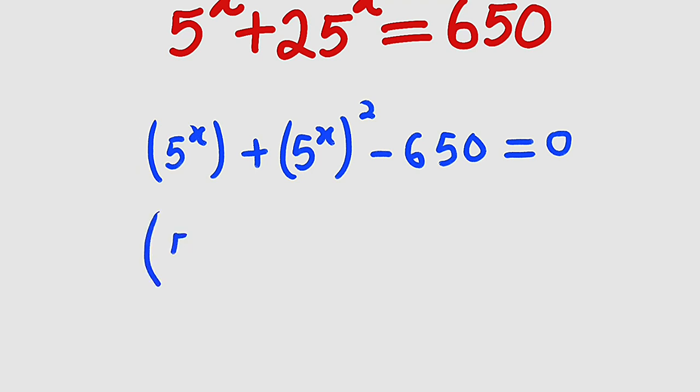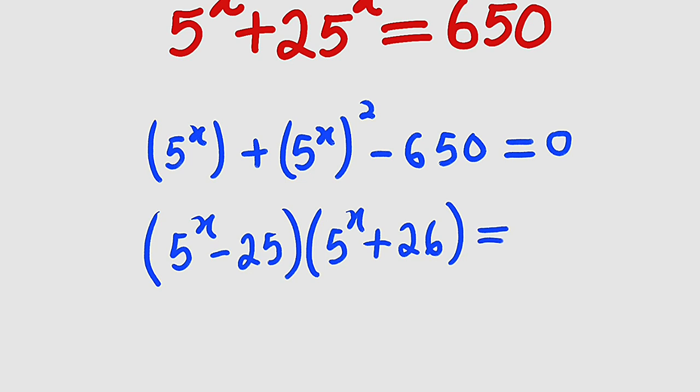So we have 5 to the power of x minus 25, then multiply by 5 to the power of x plus 26. This is equal to 0.